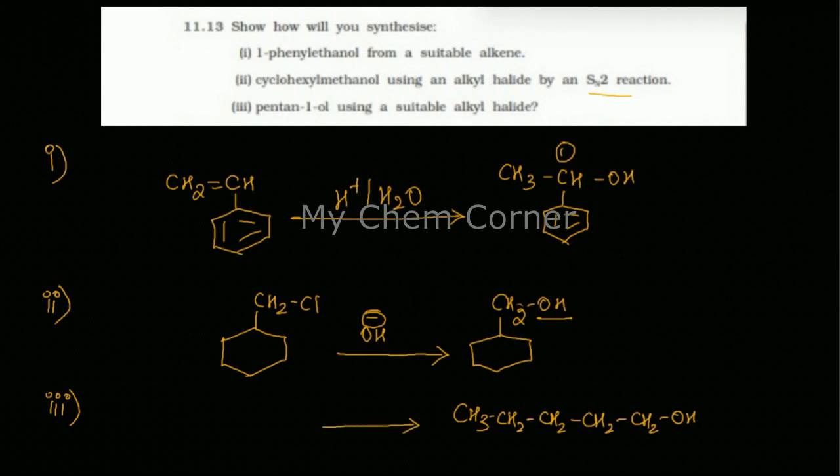Okay so I have 5 carbons. This has to be prepared from an alkyl halide. Same thing here, I will just change it to a halogen. So I have CH3-CH2-CH2-CH2-CH2 and a Cl. Basically the Cl has to change to OH so I am going to put a OH- here.